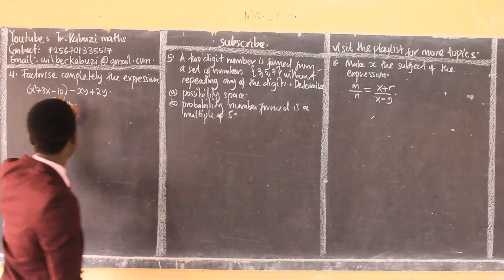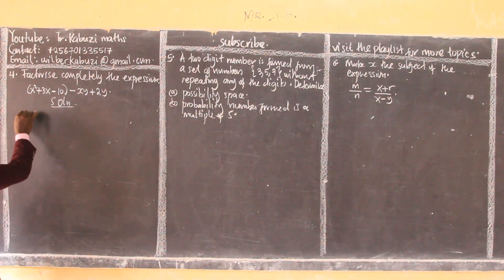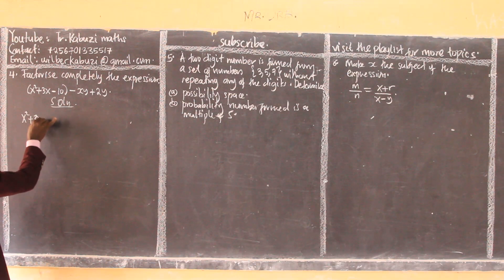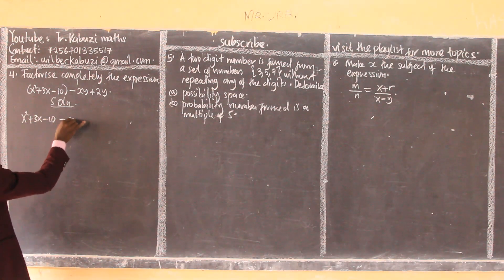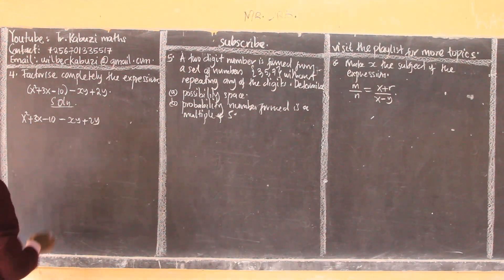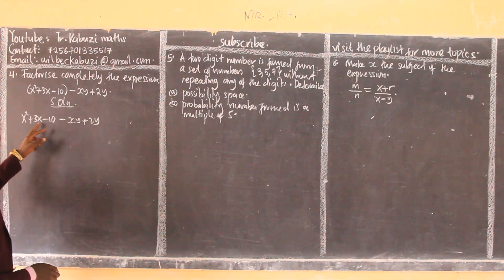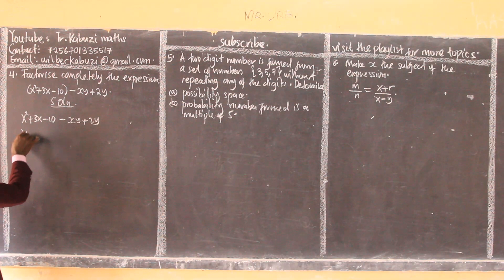So now I'm writing my solution. I have x² minus xy plus 2y. You see, I'm identifying the factors here - I'm going to have five and two, so I have x squared...